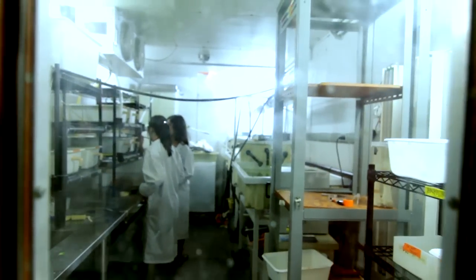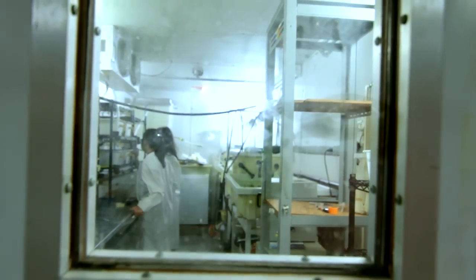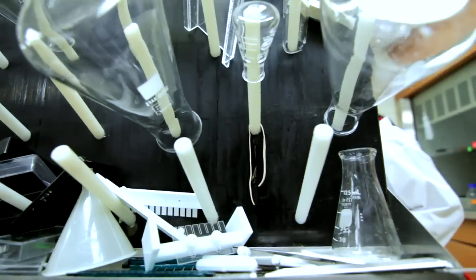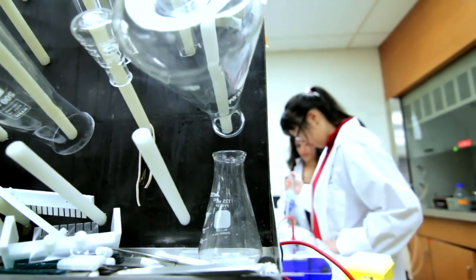For example, unlike people, snails retain the ability for central neuron regeneration well into their adulthood. So if the central neuron of a snail gets injured, the neuron regenerates.